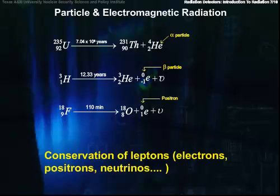There is another conservation law known only to nuclear types, known as the conservation of leptons. Electrons, positrons, neutrinos, among other particles fall into this lepton class.